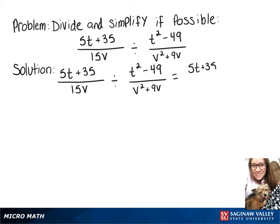We'll have 5t plus 35 over 15v times v squared plus 9v over t squared minus 49.